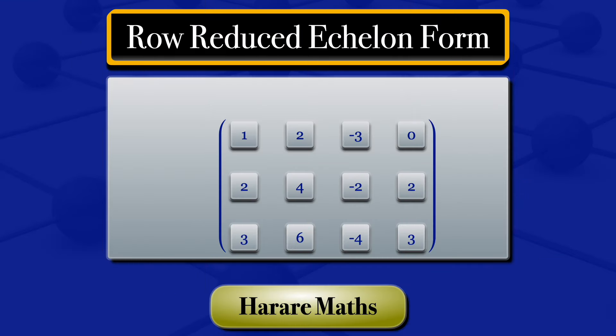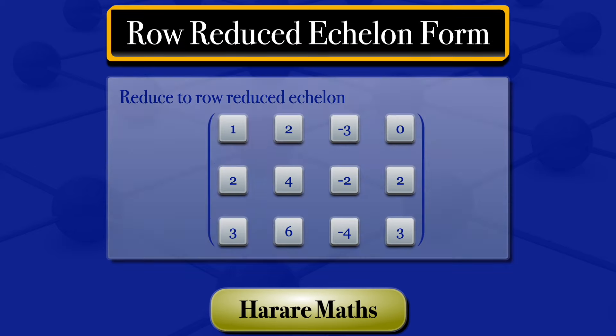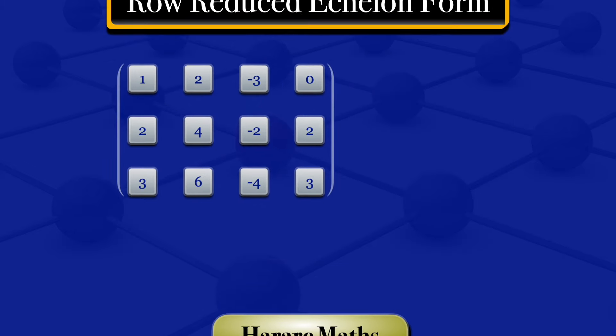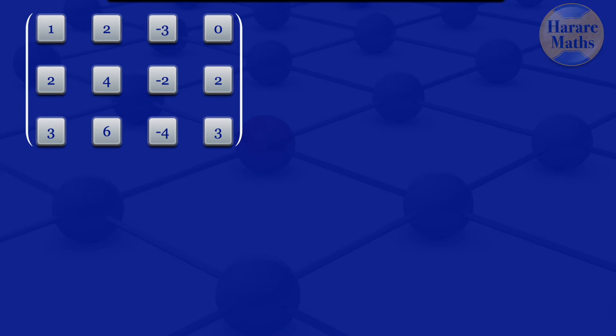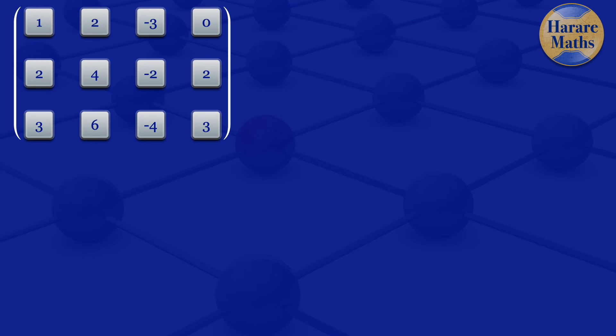In this video, I'm going to reduce this given matrix to row reduced echelon form. So looking at that matrix, I'll start by looking at what row reduced echelon form is.